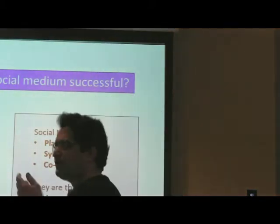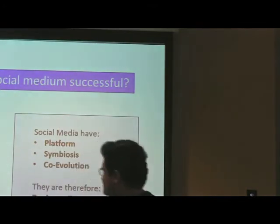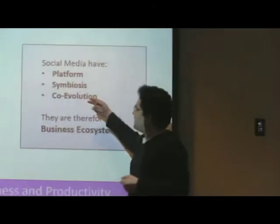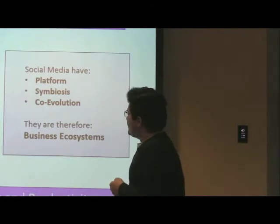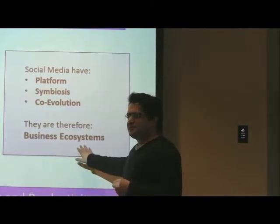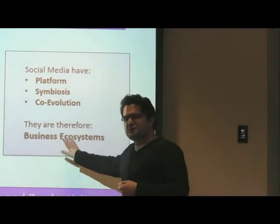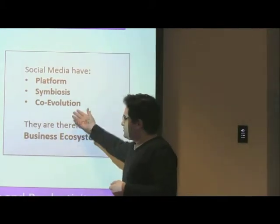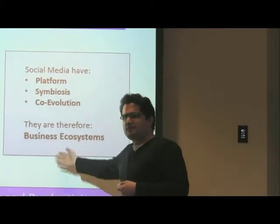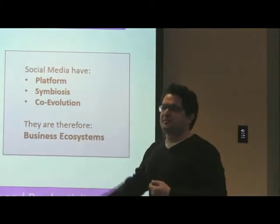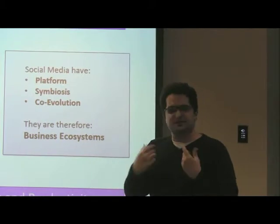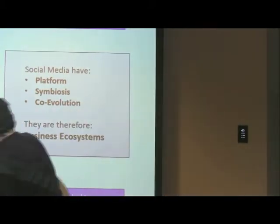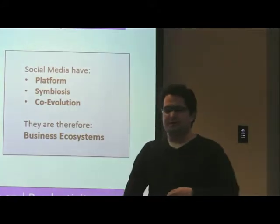We have three characteristics: platform, symbiosis, and co-evolution. Business ecosystem is a stream of theory in strategic management that says if you have these three characteristics, you have a business ecosystem. And for a business ecosystem to be successful, it needs to have innovation, robustness, and productivity.